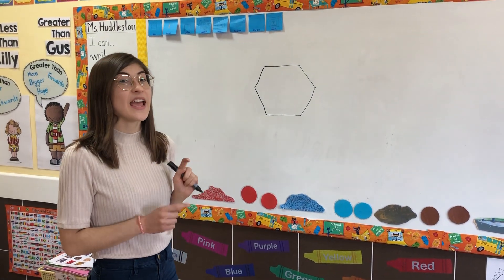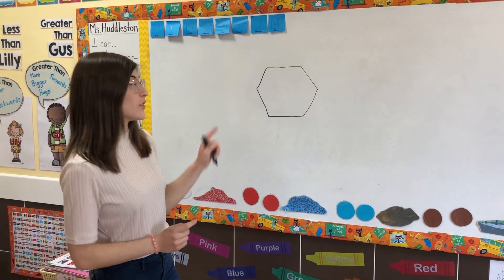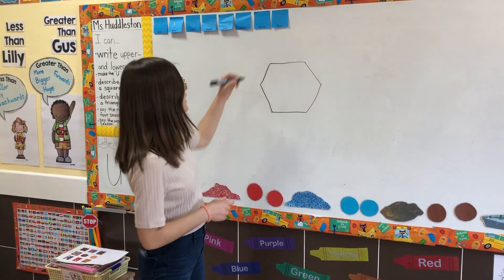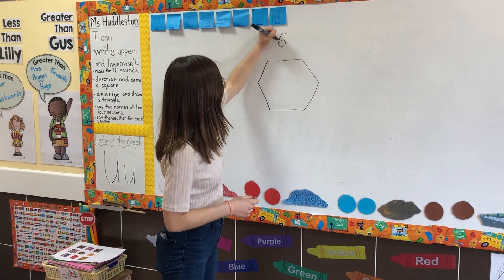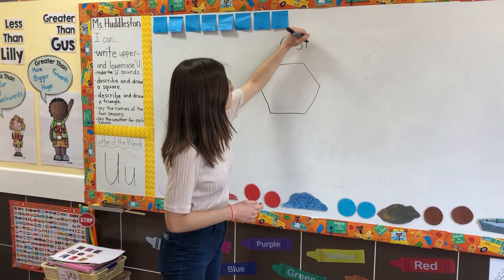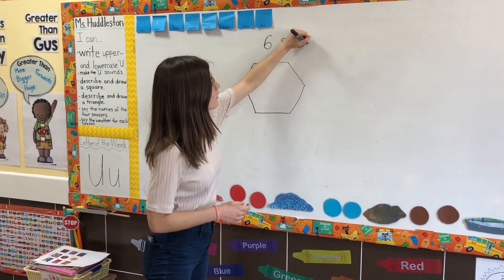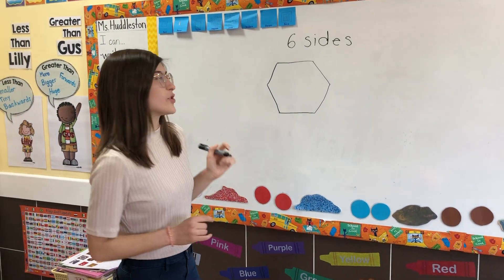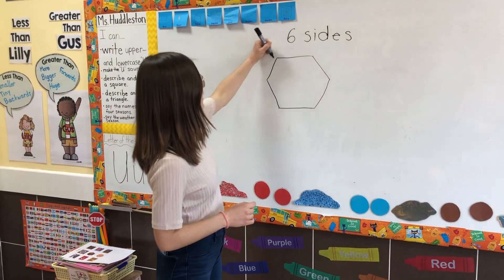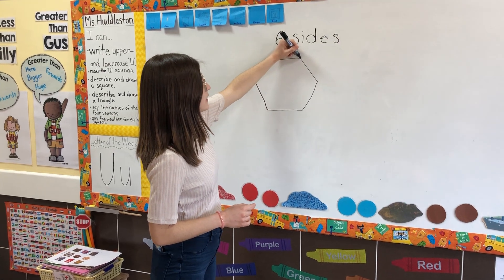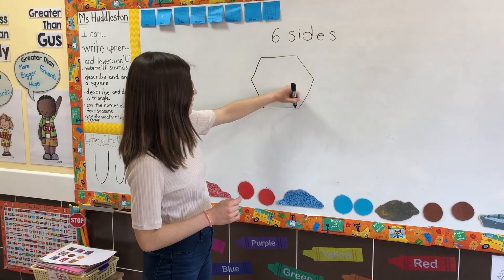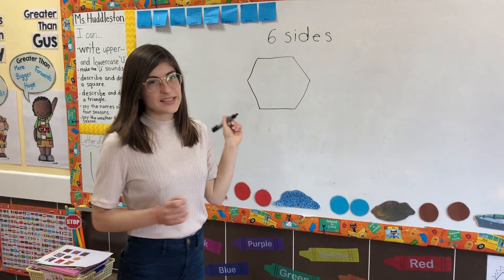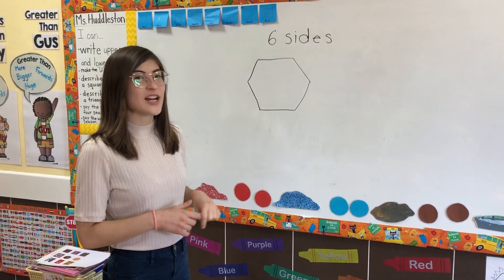Now a hexagon has six sides, so let's double check. Let's make sure there are six sides. Because if there are not six sides, it's not a hexagon. So let's check. We have one, two, three, four, five, six. Six sides. Here we have a hexagon.